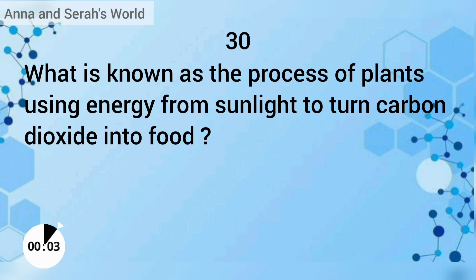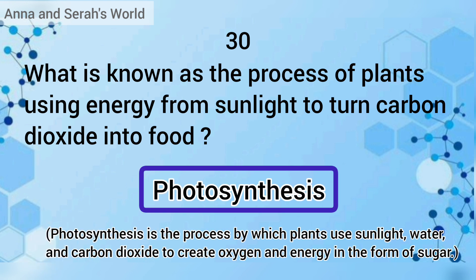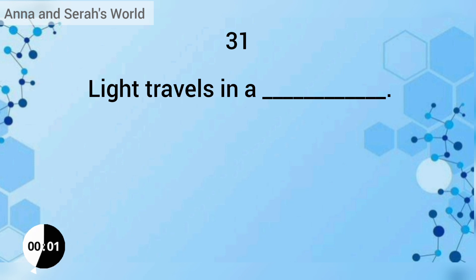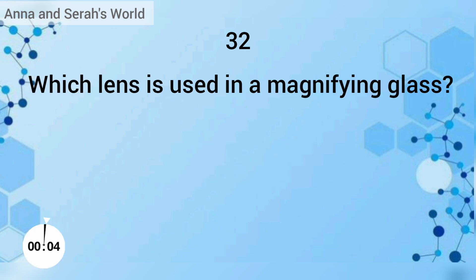What is known as the process of plants using energy from sunlight to turn carbon dioxide into food? The answer is photosynthesis. Light travels in a straight line. Which lens is used in a magnifying glass? The answer is convex lens.